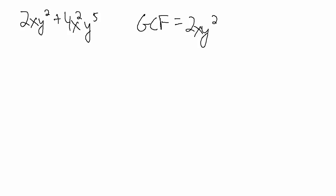Now just like before, we're going to use the greatest common factor to factor. And remember, factoring is just dividing. So 2xy squared plus 4x squared y to the fifth, whole thing divided by 2xy squared.